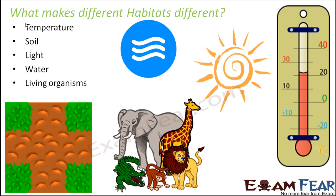Living organisms — the type of organisms which are living in a place also makes it different. Because habitat is nothing without organisms — it is the home of organisms, and organisms need to live there. So the type of organisms which live there also make a habitat different.